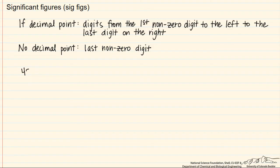Let's say we have 4500, no decimal point, so from the first non-zero to the left to the last non-zero, since there's no decimal point, and that would mean we have two sig figs.